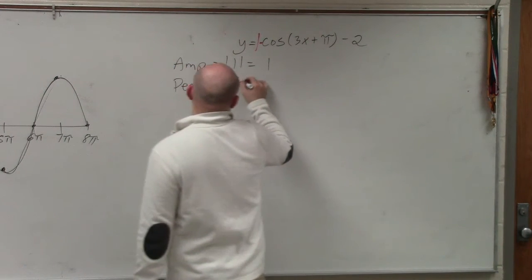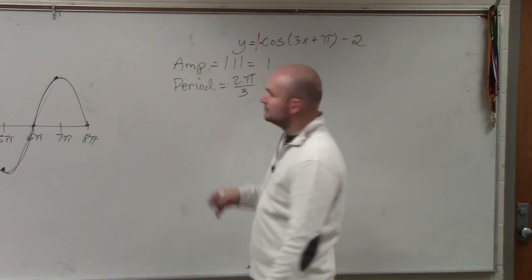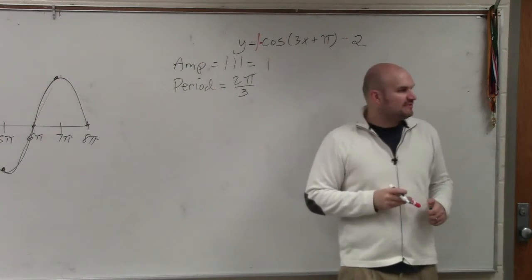Period is going to be 2π divided by b. b in this case is 3. Done. No simplifying at all. Easy.